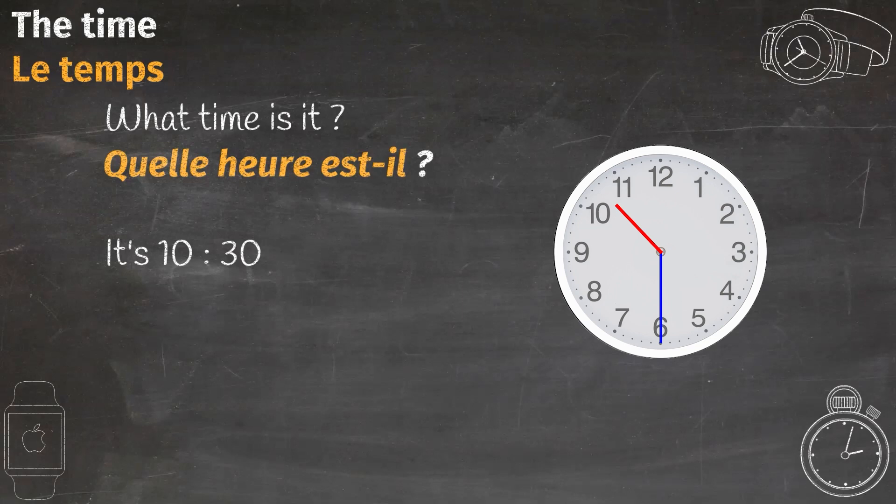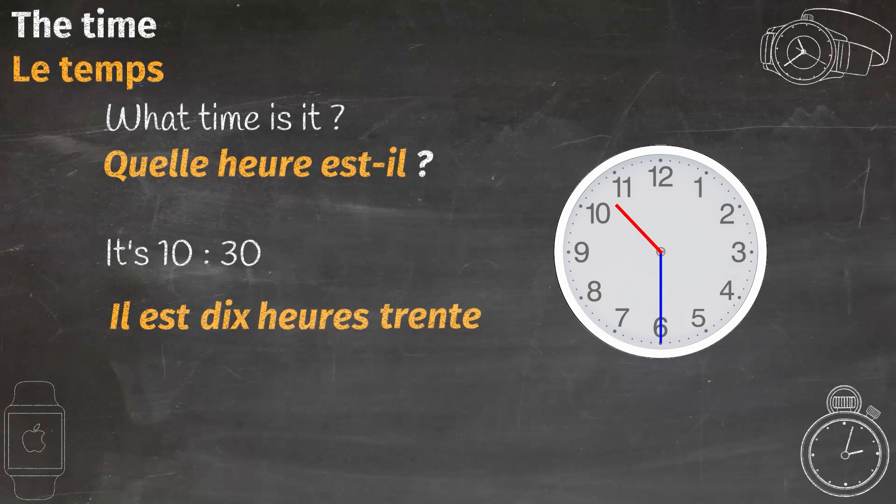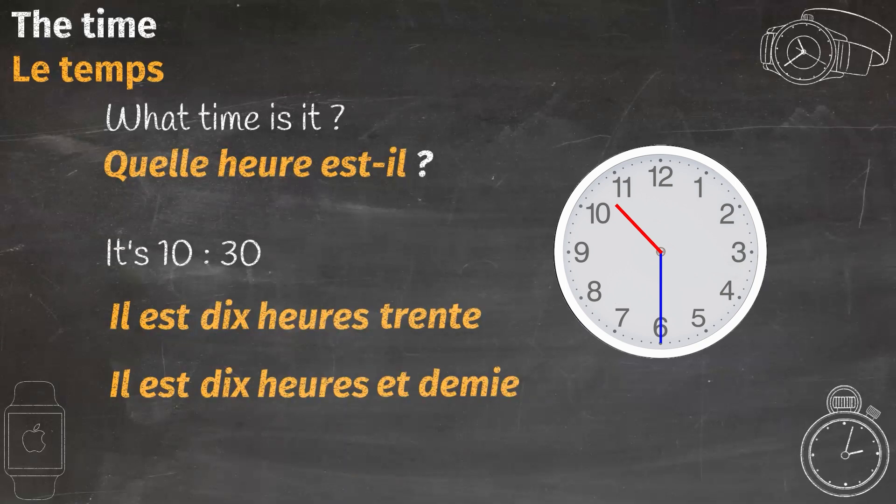It's 10:30. Il est, which means it's. Dix, which means 10. Heures, which means hours. And trente, which means 30. Together, il est dix heures trente. Another question: what if I want to say it's half past 10 instead of it's 10:30? So I need to know how to say half in French language. Demi, this word means half. Once again, in French we cannot say it's half past 10, it doesn't exist. We can only say it's 10 hours and half. Il est dix heures et demi.